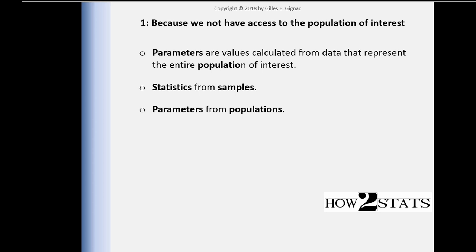So this is the first reason why we do statistics: it's all related to the fact that we do not have access to the population of interest. We're using samples of some sort — random or convenience — and we need to estimate the chances that we're fooling ourselves into thinking there's something going on at the population level when in fact there is nothing going on. I'm going to cover the next reason, which is estimating the magnitude of an effect, in the next video.